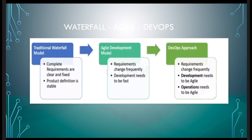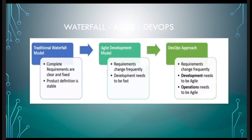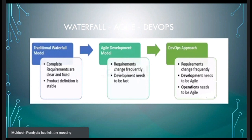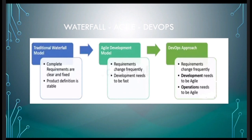In the agile model, instead of zero to 100 percent, we break it into small chunks: 0–25, 25–50, 50–75, 75–100. Each part is called a sprint. In each sprint, we do the entire SDLC, show the client the outcome, get feedback, and implement it in the next sprint. We have regular calls with clients during every sprint, get feedback, and improve the product according to requirements.